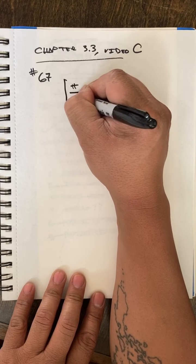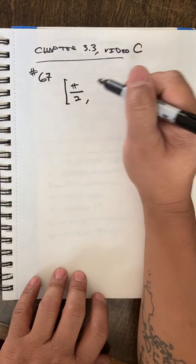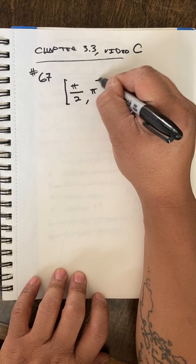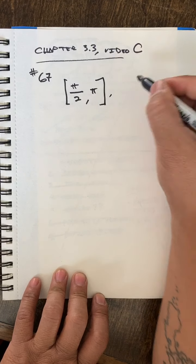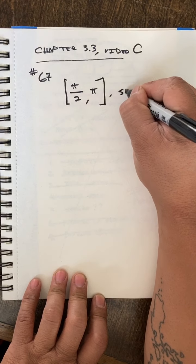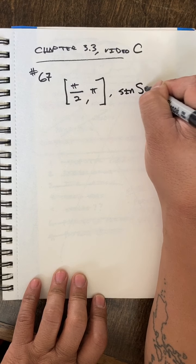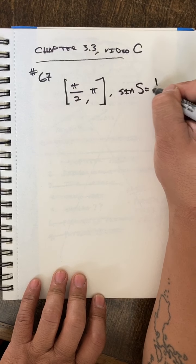and pi. And they're saying that the angle that we're looking for, sine of s, the sine of the angle we're looking for, is equal to one half.